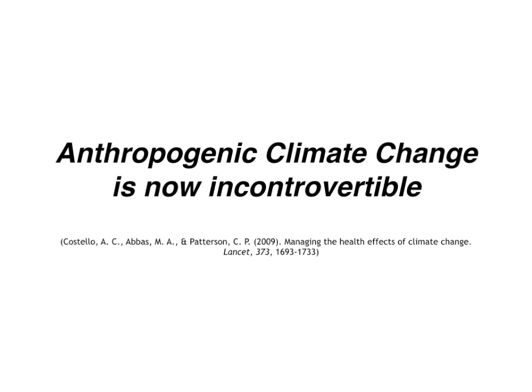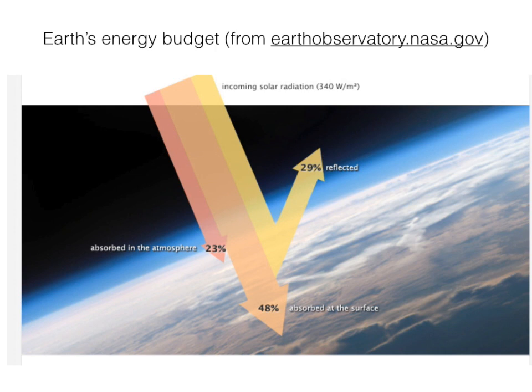To get a grip on that, let's take a look at the concept of the energy budget that earth has — in other words, how much energy earth receives and how much energy earth gives out. Earth's main source of energy is from the sun's rays. About 29 to 30 percent of the solar radiation that reaches the earth is reflected, and the rest is absorbed by the oceans, the earth's surface, and the atmosphere.